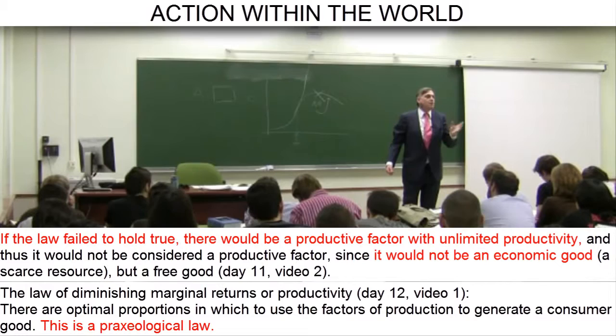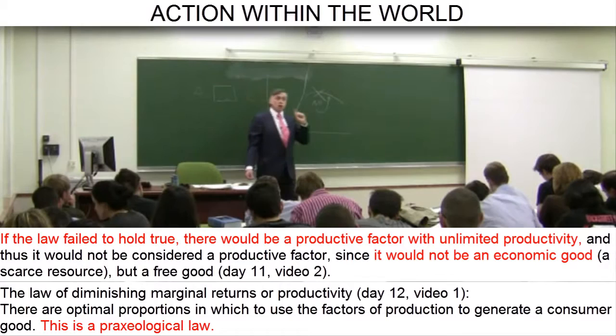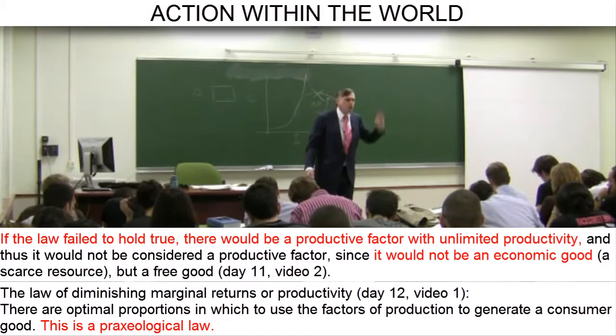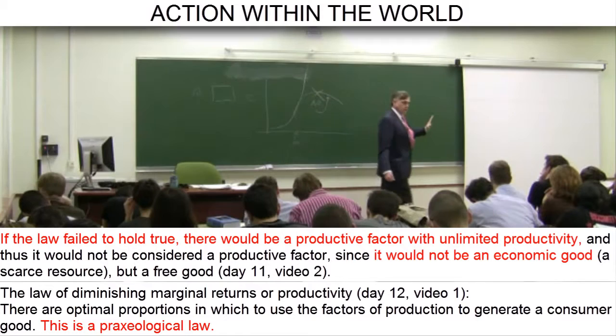Therefore, with higher order economic goods — factors of production — the law of diminishing marginal productivity must inevitably hold true. Every economic good must by definition be scarce, that is, insufficient to achieve all the ends the actor intends to achieve. If the law did not hold true, that would mean the highest order economic good, or factor of production, considered fixed in the example, would have unlimited productive capacity. And therefore, it would cease to be an economic good — it would no longer be scarce. It would be a free good.